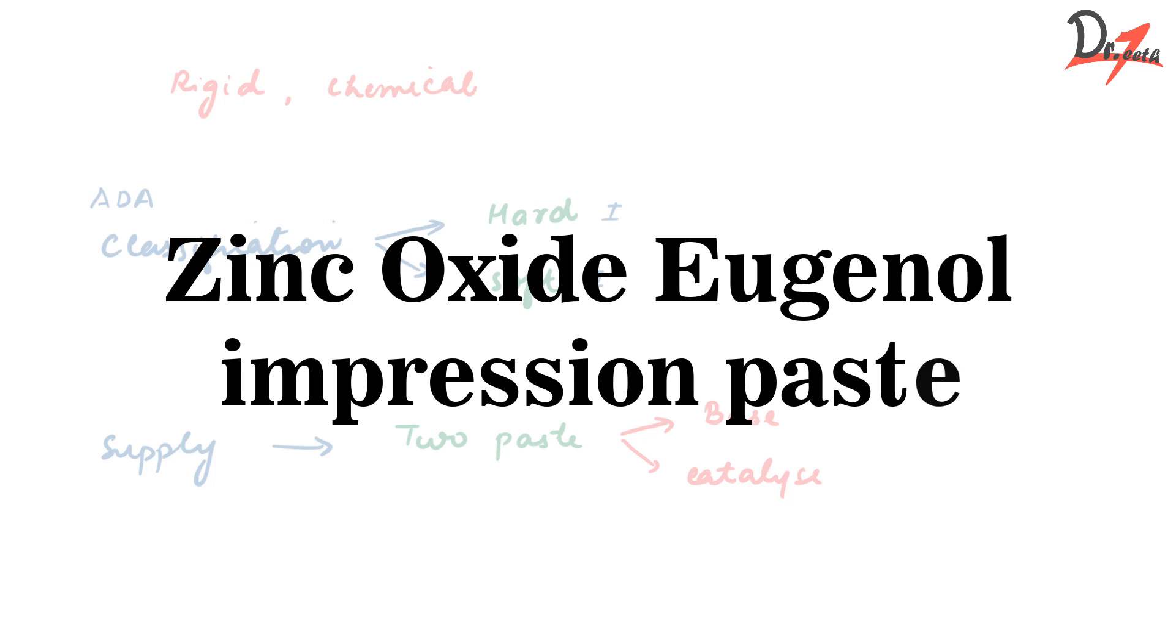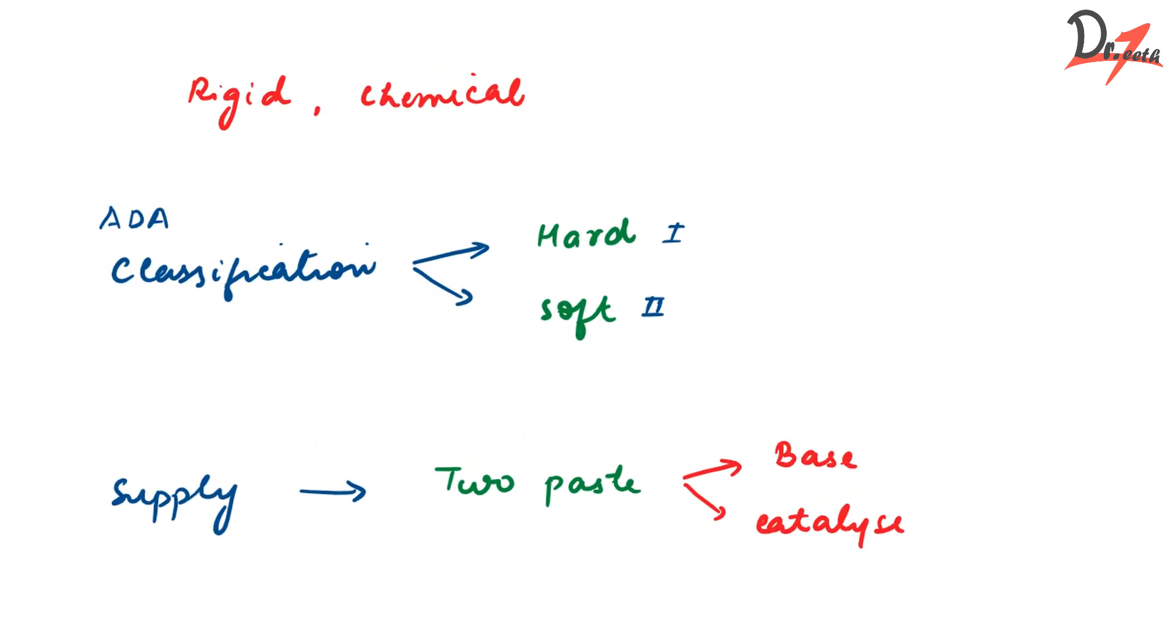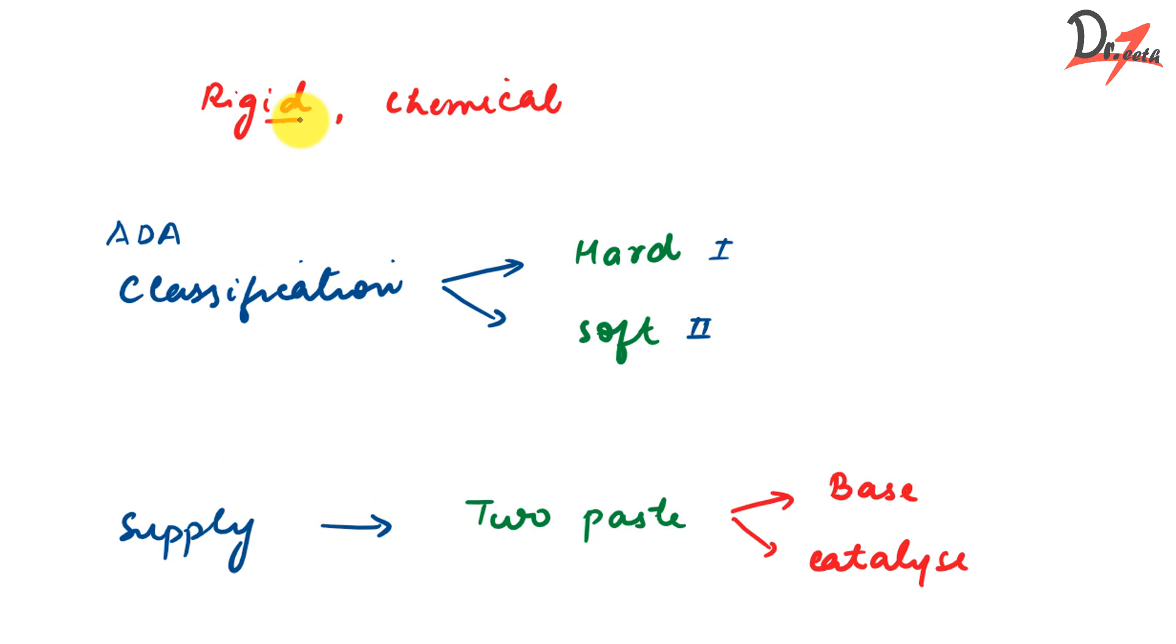Now zinc oxide eugenol, it is classified as a rigid or inelastic impression material and these set by chemical reaction. They are classified into two types: we have hard, which is ADA type one, and soft, which is ADA type two.